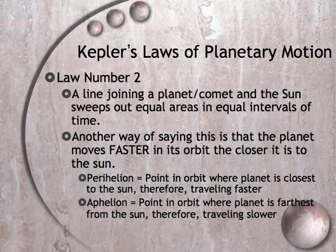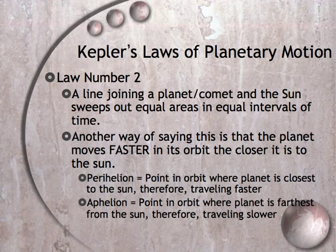Perihelion is the point in the orbit where the planet is closest to the sun. Aphelion is the point where it's farthest away. I use alliteration to remember this: perihelion is pretty close, and aphelion is away. Perihelion for Earth happens on December 21st, so if you're watching in January, we're just moving out of perihelion.